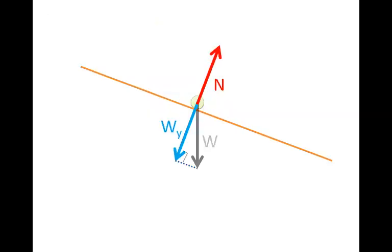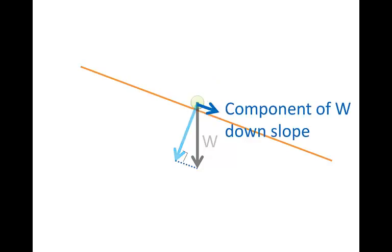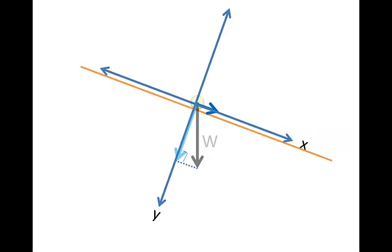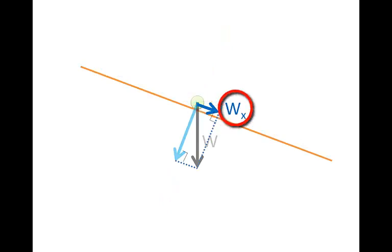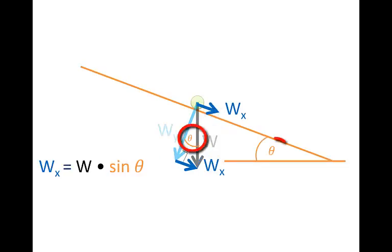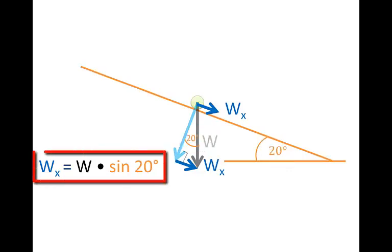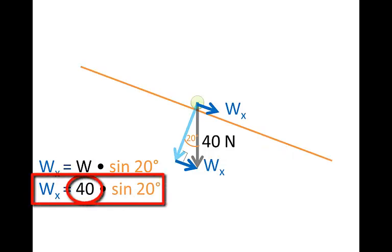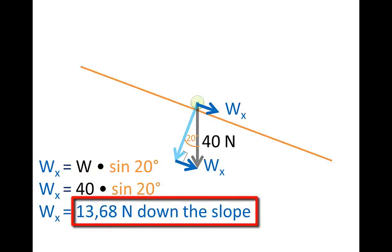We've already seen that we can resolve the weight of the object into its component into the slope. Now we can also resolve it into the component down the slope. So we imagine putting a Cartesian plane over this such that the x-axis lies parallel to the slope and we are resolving the weight into the y and x components. So the component of the weight which acts parallel to the slope down the slope can be called wx, the x component of the weight. And since this is a rectangle that vector equals that vector and these are right angles. We also know this angle theta here because this angle is the same as the angle of the inclined plane and in this question that angle is 20 degrees. So we know that wx is equal to w times sine 20 degrees. We know that from trigonometry. We substitute in 40 for weight, wx equals 40 sine 20 degrees which is 13.68 newtons down the slope.